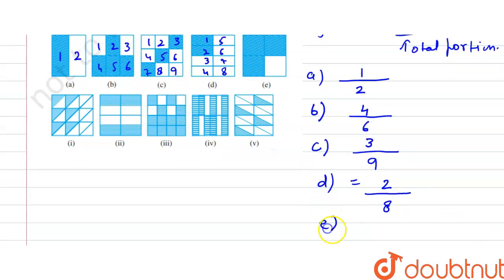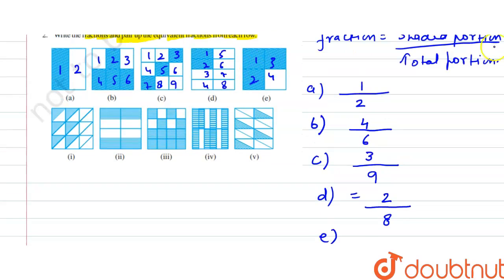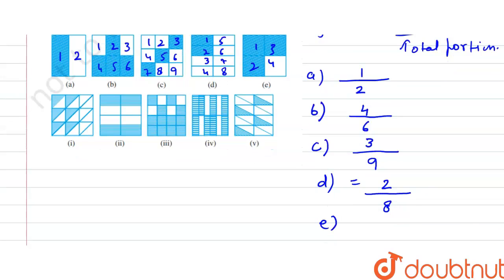Now for figure E, counting 1, 2, 3, 4 — total is 4 and the shaded portion is 3. So these are the fractions of each figure.